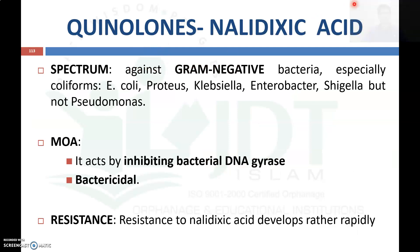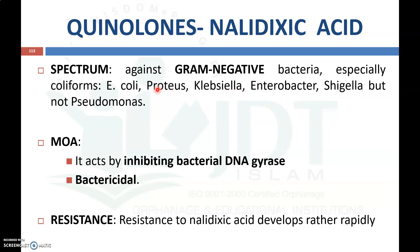Nalidixic acid is a narrow spectrum antibiotic which is active against gram-negative bacteria alone, especially coliform organisms like E. coli, Proteus, Klebsiella, Enterobacter, and Shigella, but it is not active against Pseudomonas.